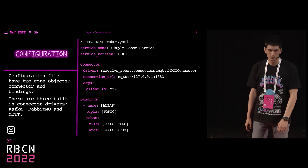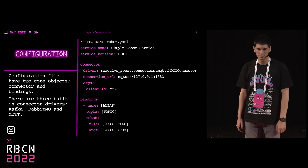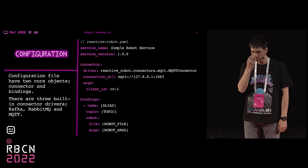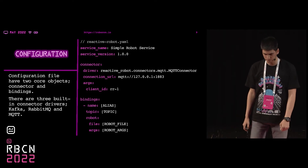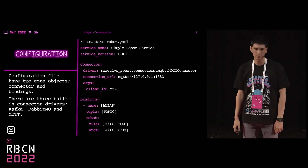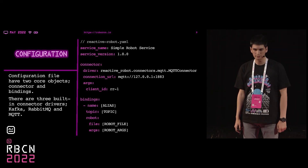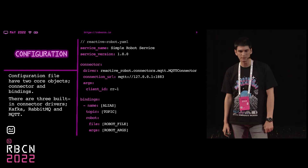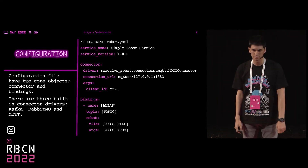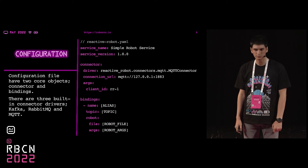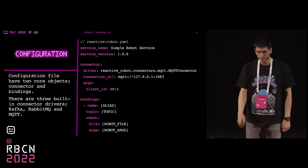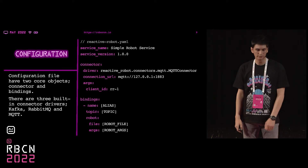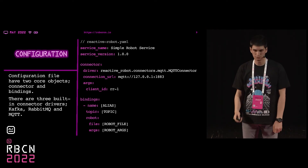The next core object is the binding object. It is a list of objects consisting of a display name, a topic, and a robot object. The name property declares the display name, the topic is used for subscription, and the robot object consists of the robot file and the runtime arguments for the robot.